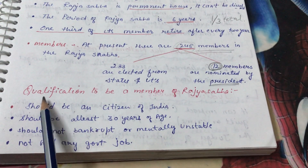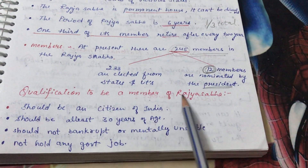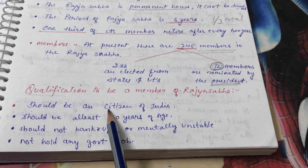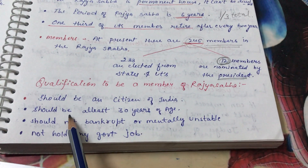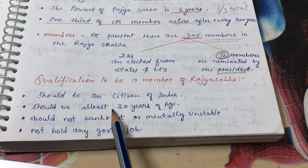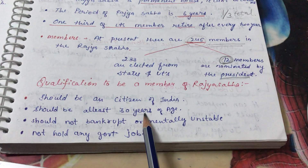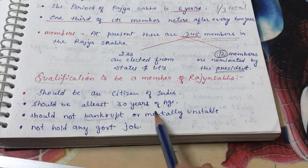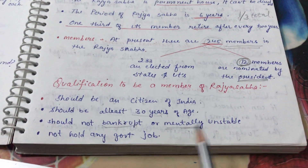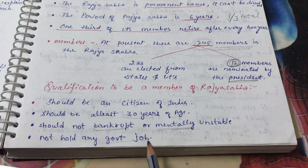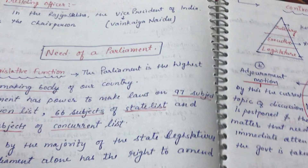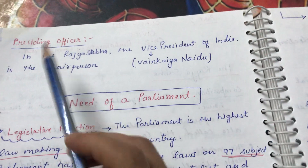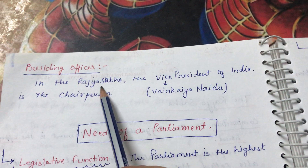Now the qualifications to be a member of Rajya Sabha: he or she must be a citizen of India, must be at least 30 years of age, should not be bankrupt or mentally unstable, and should not hold any government job or receive any government salary.